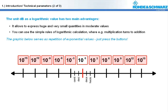You can use the simple rules of logarithmic calculation, where multiplication turns to addition and division to subtraction. Values taken by the power of a number are reduced to multiplication and so on.